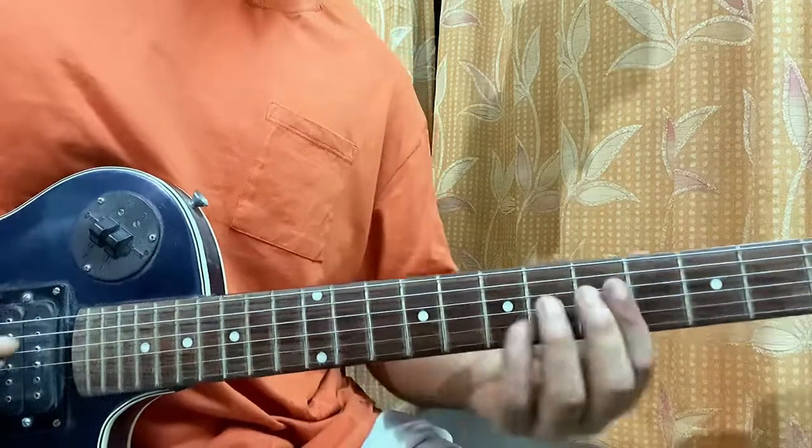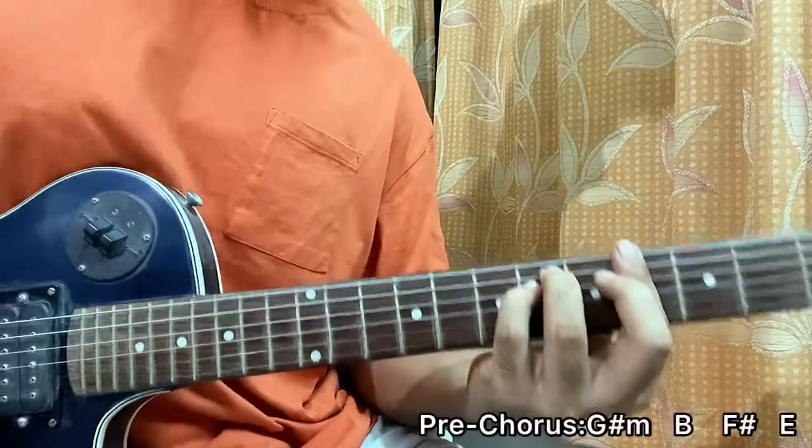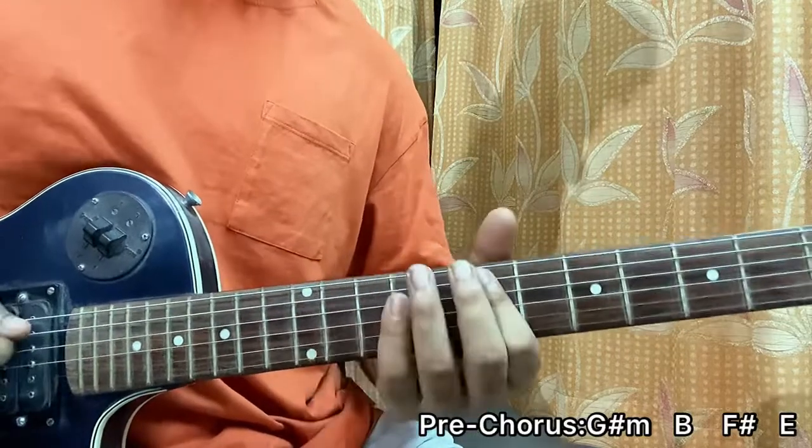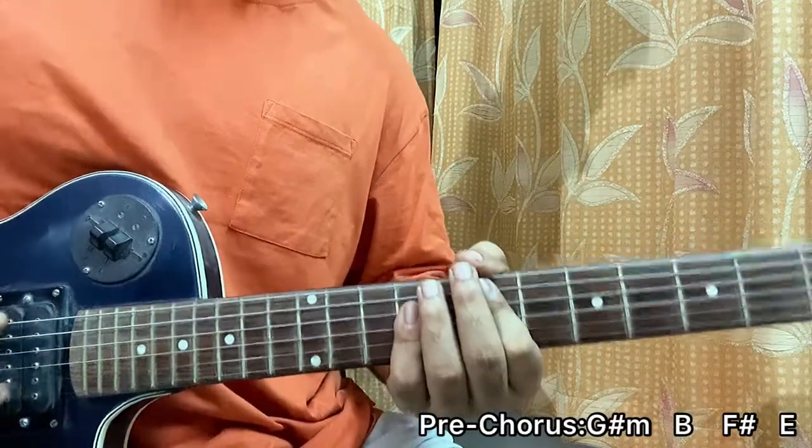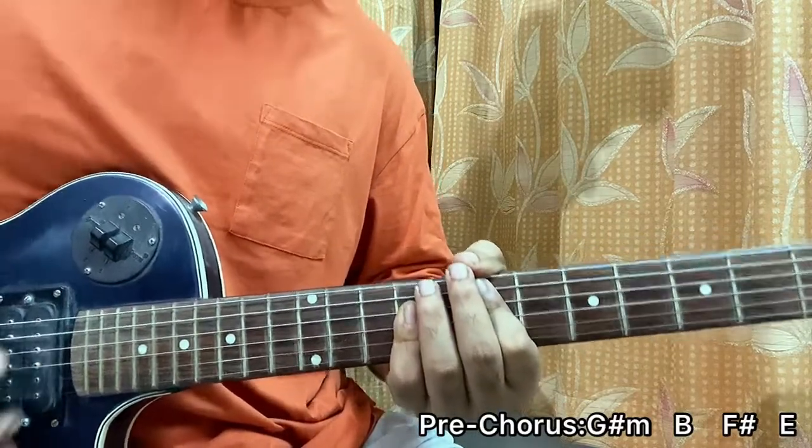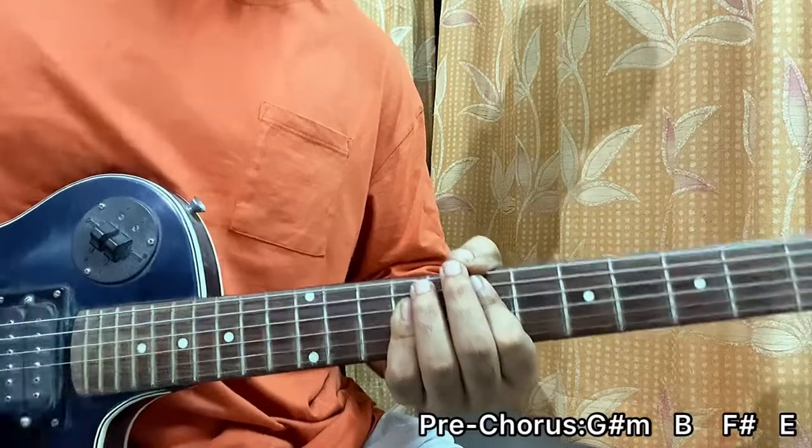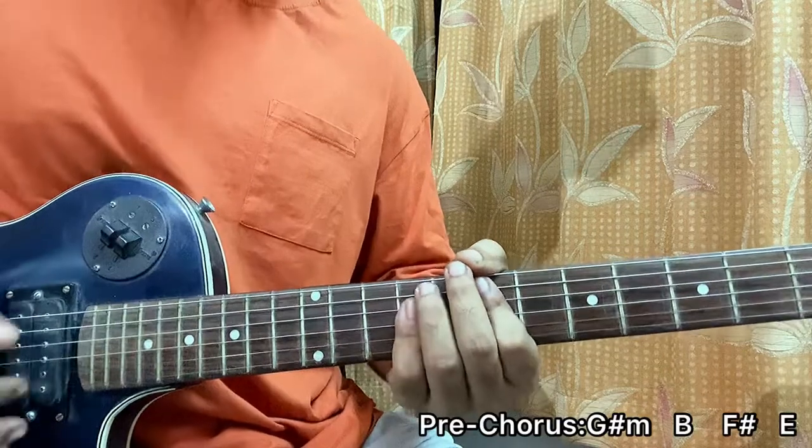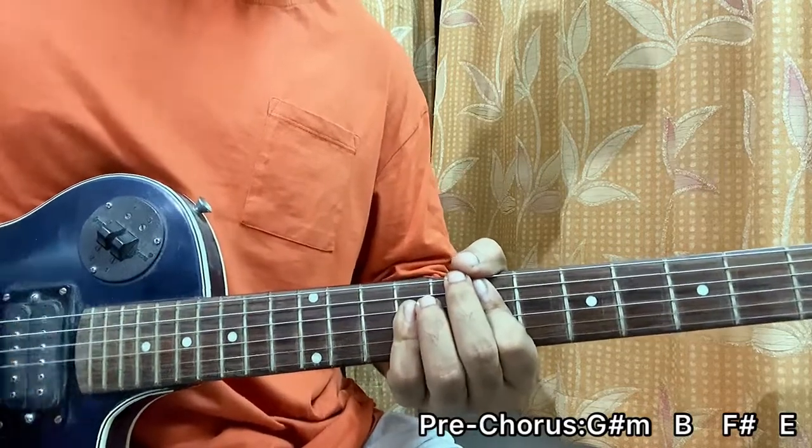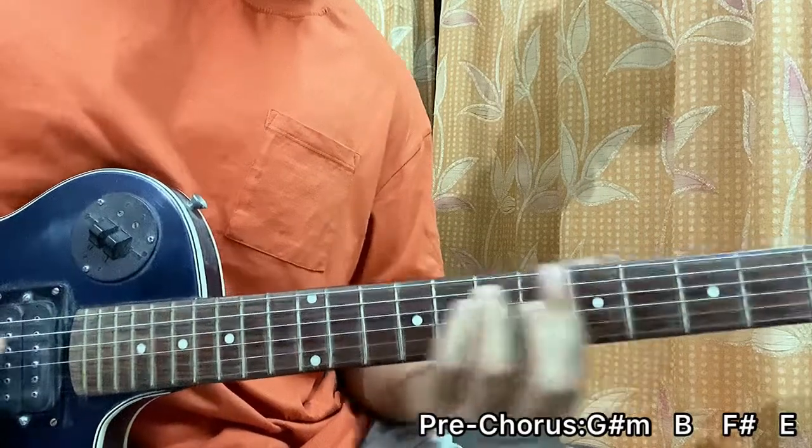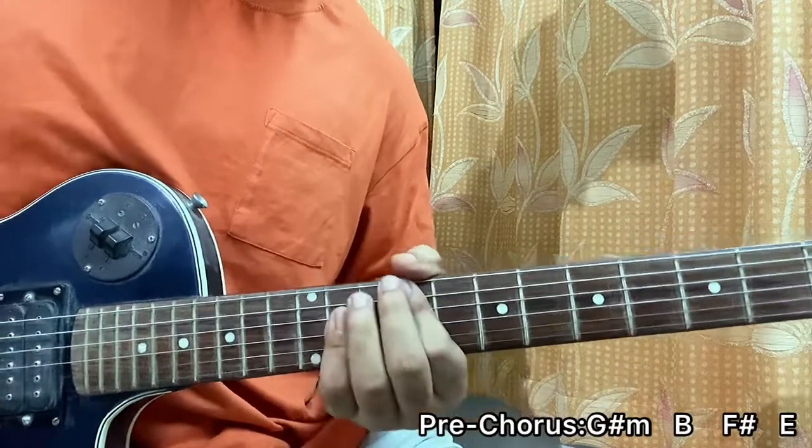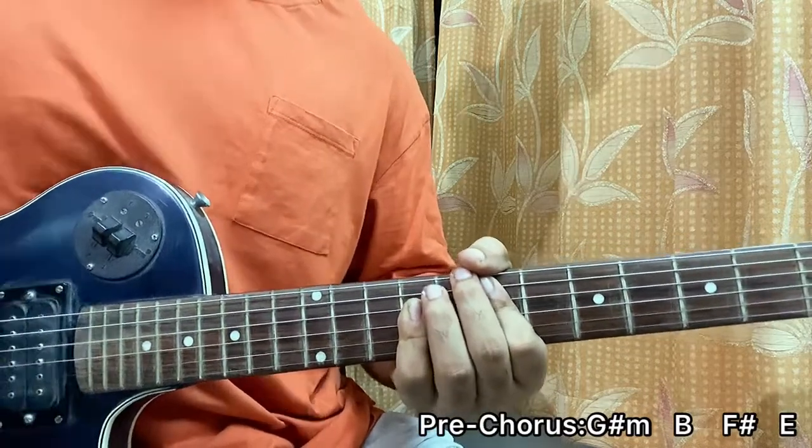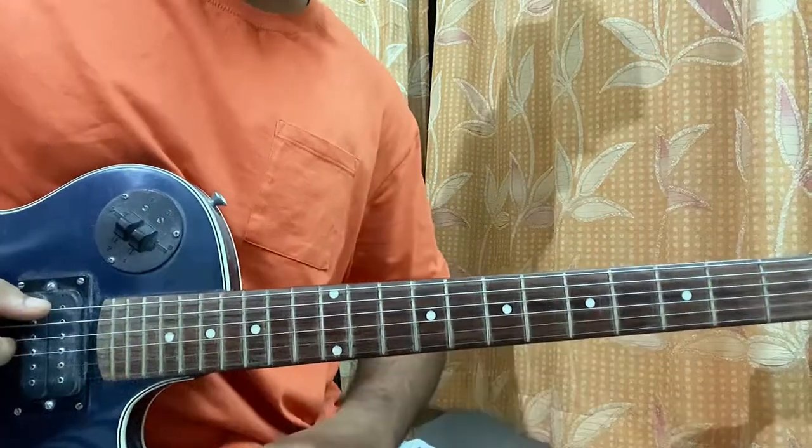And, after you've done that, we'll basically go to the chorus. Over here, we have G sharp minor. Then, B major. Then, F sharp major. And then, we'll hit the E major chord. We'll stay there for a bit more time. So, it goes like this. Let me go for down, down, up, up, down, down.